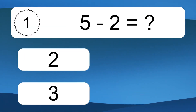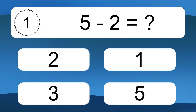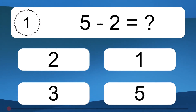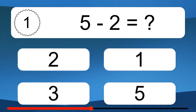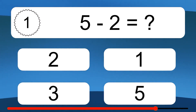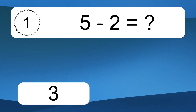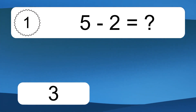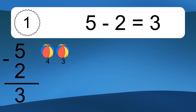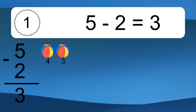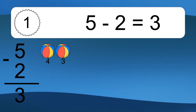5 minus 2 equals what? 5 minus 2 equals 3. Let's count it: 4, 3.